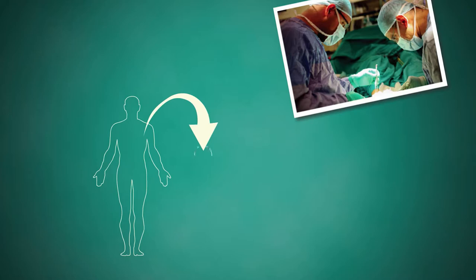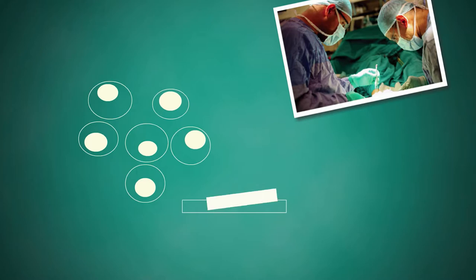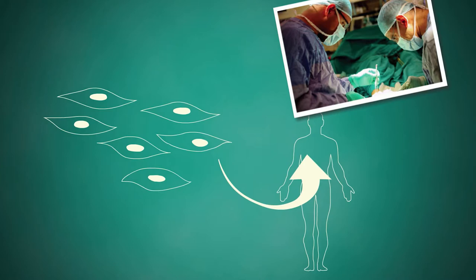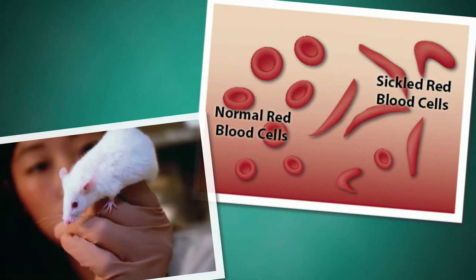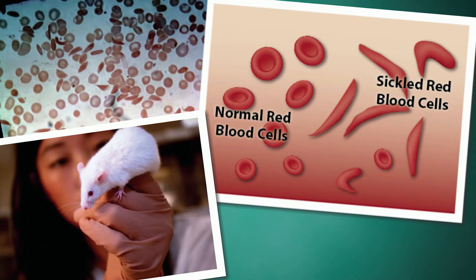First, doctors isolate cells from a patient with a genetic disorder and create induced pluripotent stem cells. Next, the defective gene is replaced with a functional copy. Finally, the cells are differentiated into the proper cell type and put back into the patient. This process has been used to cure mice of sickle cell anemia, suggesting this approach may also work in humans.